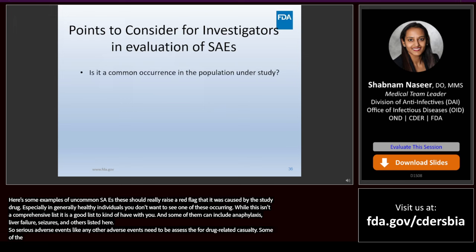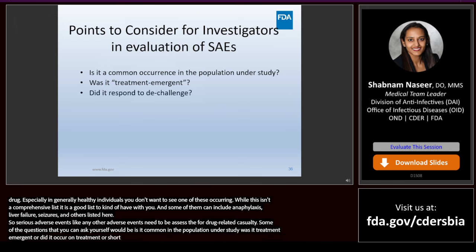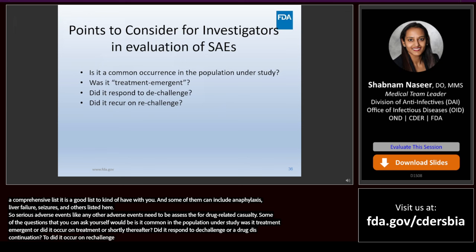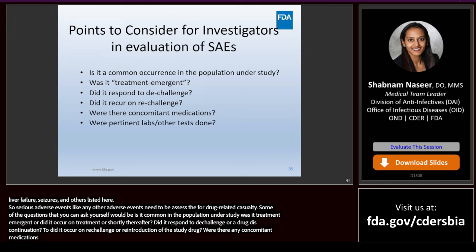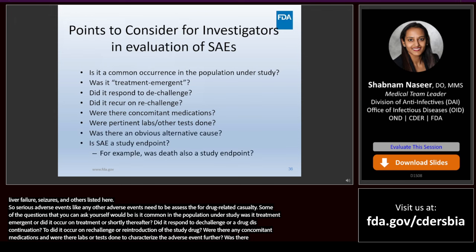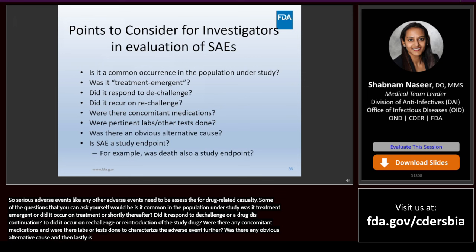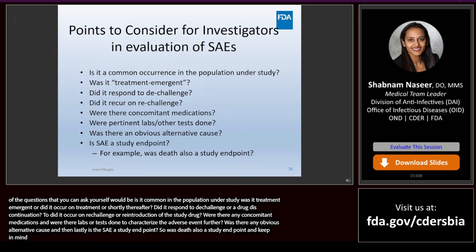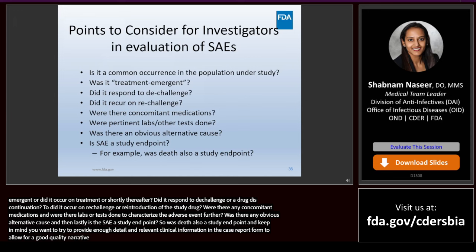Some of the questions you can ask yourself to determine drug-related causality: is it common in the population under study? Was it treatment emergent — did it occur on treatment or shortly thereafter? Did it respond to de-challenge or drug discontinuation? Did it recur on re-challenge or reintroduction of the study drug? Were there any concomitant medications on board that may have contributed? Were labs or tests done to characterize the adverse event further? Was there any obvious alternative cause? And is the SAE a study endpoint? You want to provide enough detail in the case report form to allow for a good quality narrative to be generated.